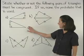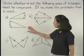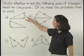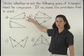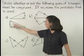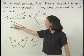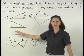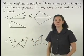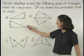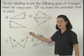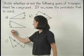In Part A, notice that we have two angles and the included side of one triangle congruent to two angles and the included side of a second triangle. Therefore, we can say that the triangles are congruent by angle-side-angle.